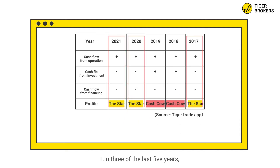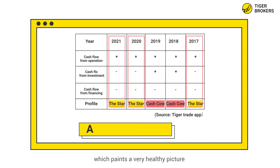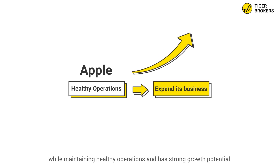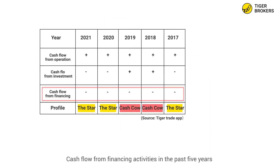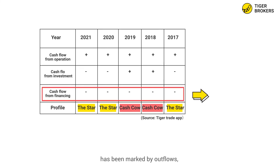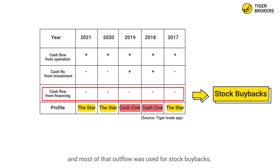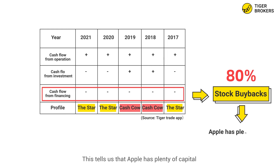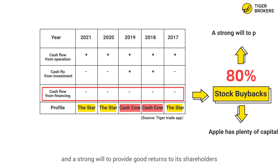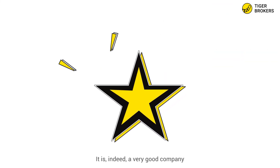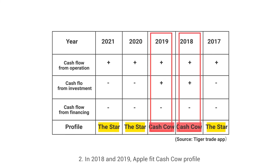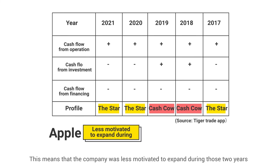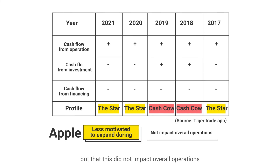One, in three of the last five years, Apple has fit the star profile, which paints a very healthy picture. It indicates that Apple has been able to expand its business while maintaining healthy operations and has strong growth potential. Cash flow from financing activities in the past five years has been marked by outflows, and most of the outflow was used for stock buybacks, accounting for more than 80% of the cash outflow from financing activities. This tells us that Apple has plenty of capital and a strong will to provide good returns to its shareholders. It is indeed a very good company. Two, in 2018 and 2019, Apple fits the cash cow profile. This means that the company was less motivated to expand during those two years, but that this did not impact overall operations.